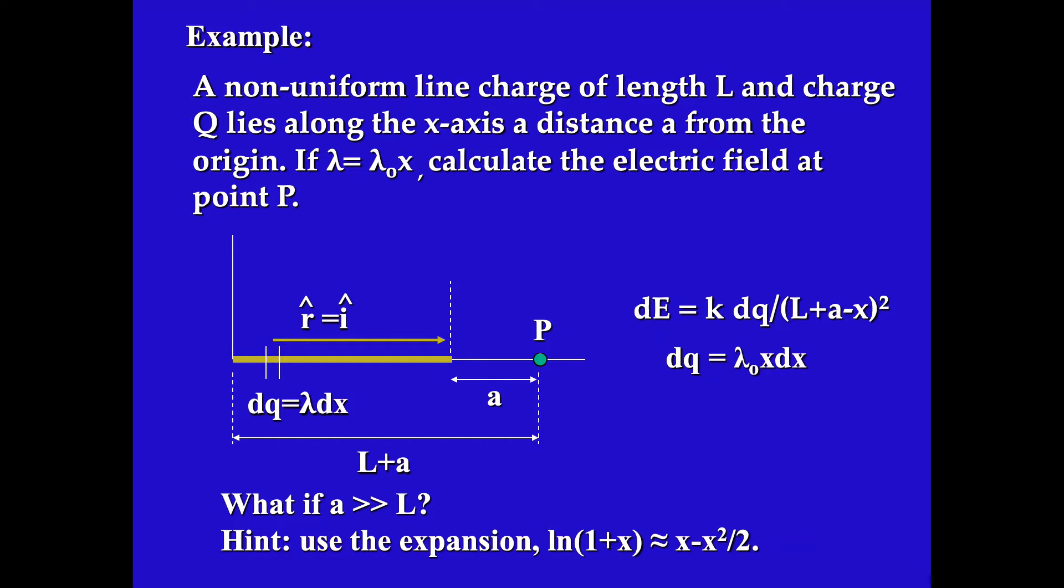In this particular problem we have a rod that is along the x-axis. Its length is L. We want to calculate the electric field due to the rod at distance A from the end of the rod. In this particular example, the charge distribution is non-uniform. It's given by lambda equals lambda naught times x.